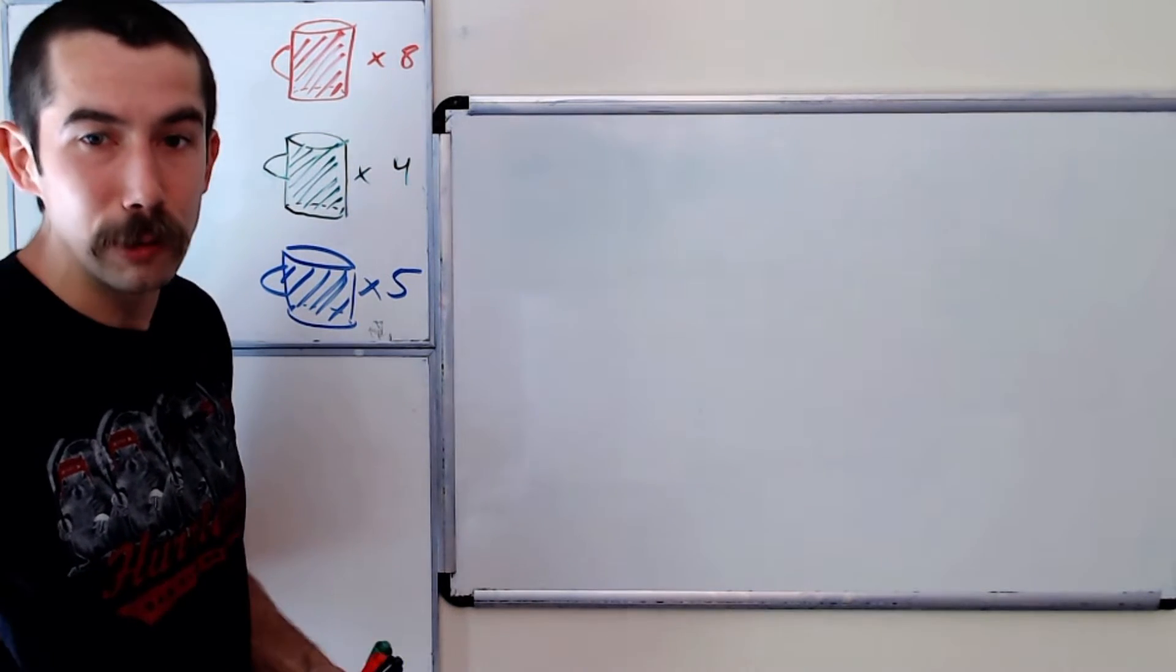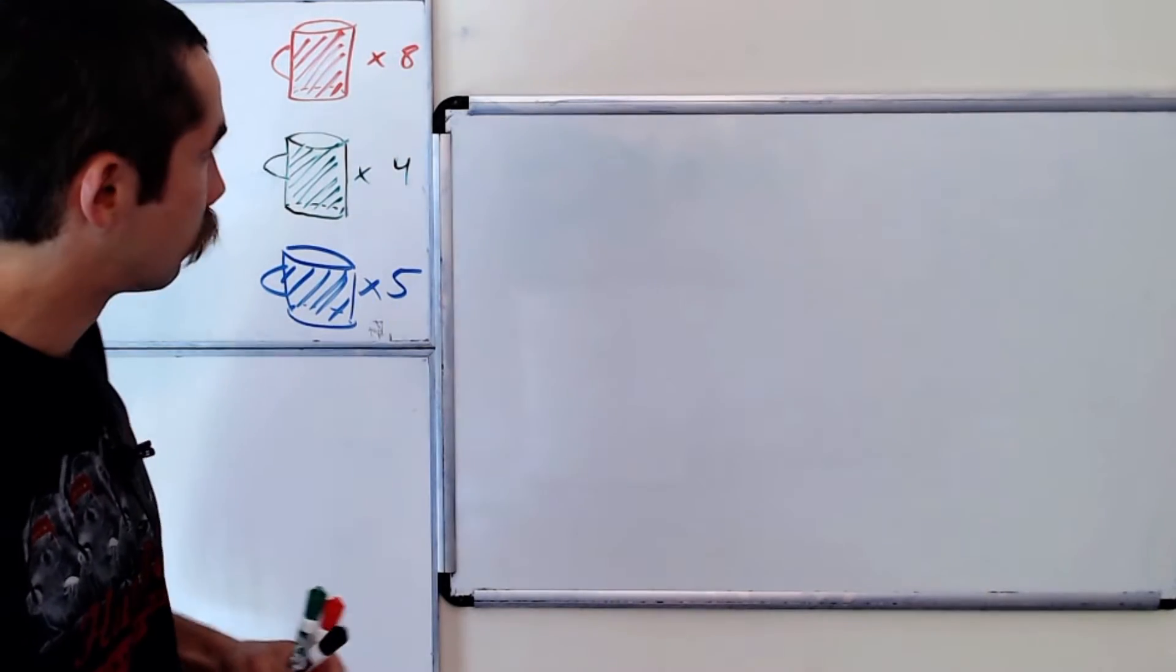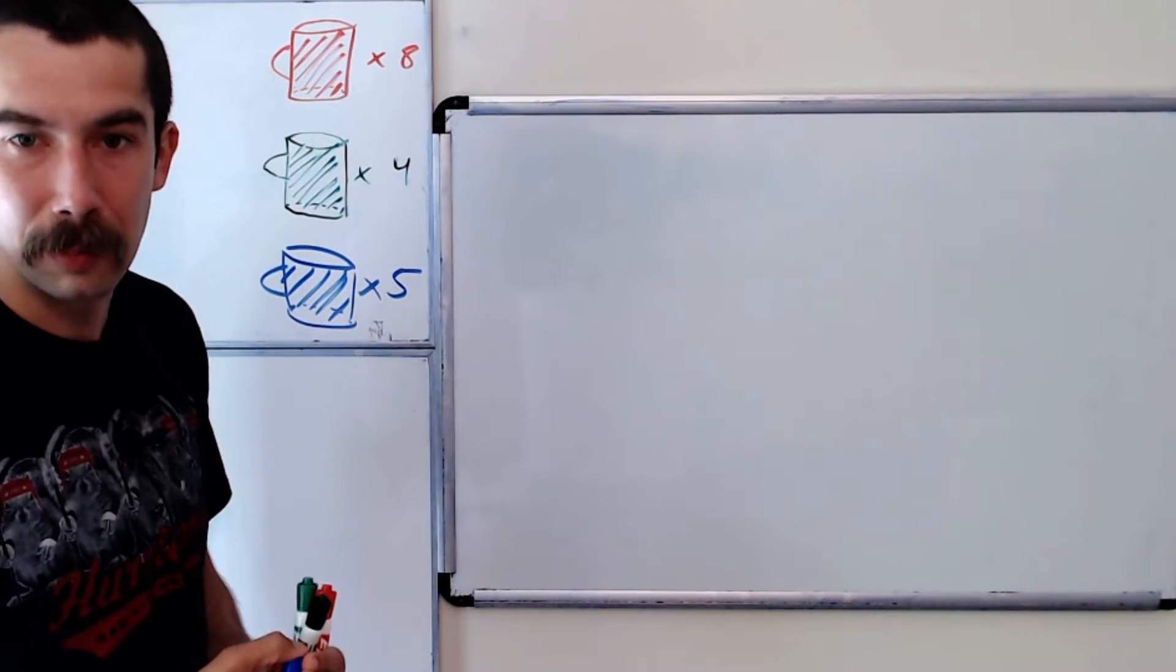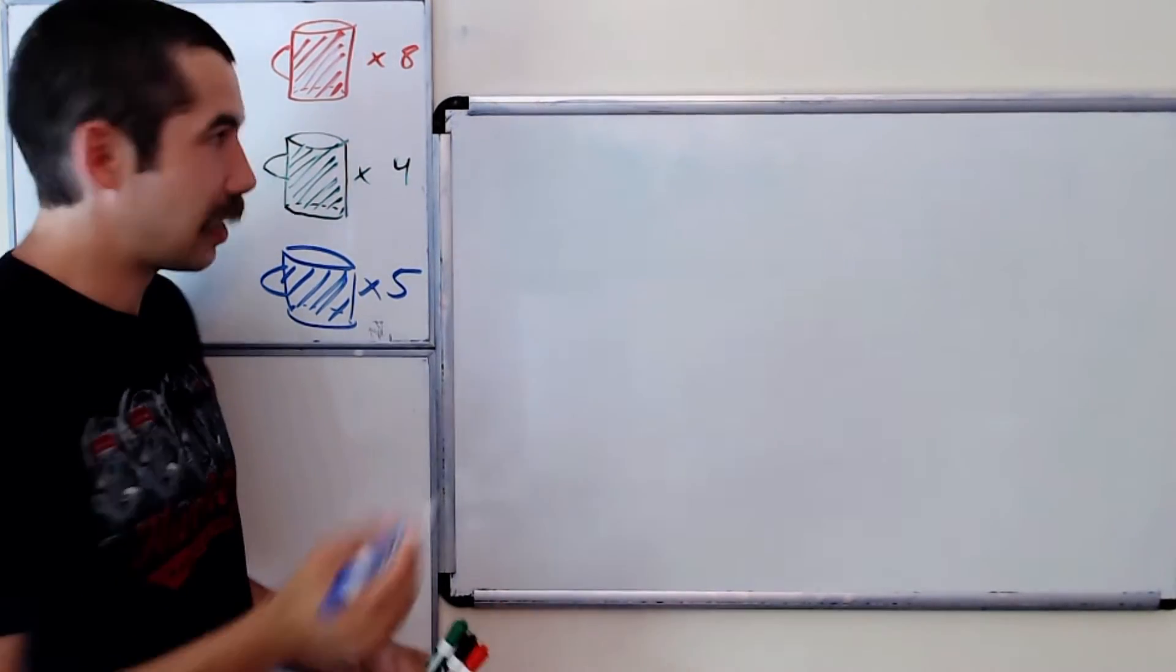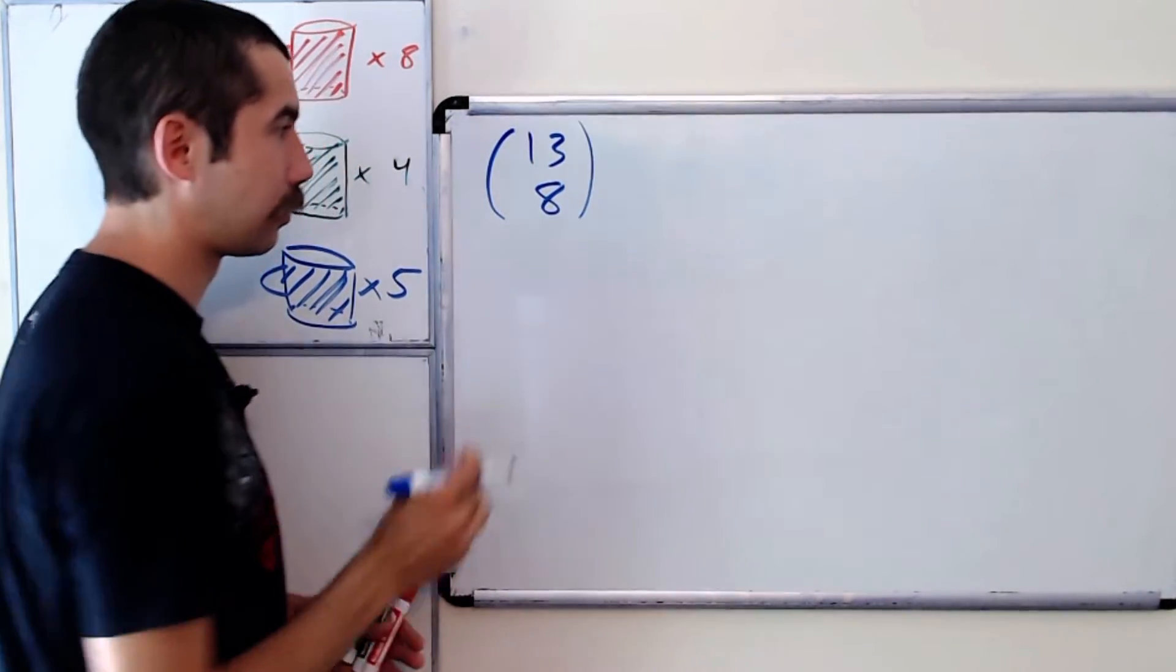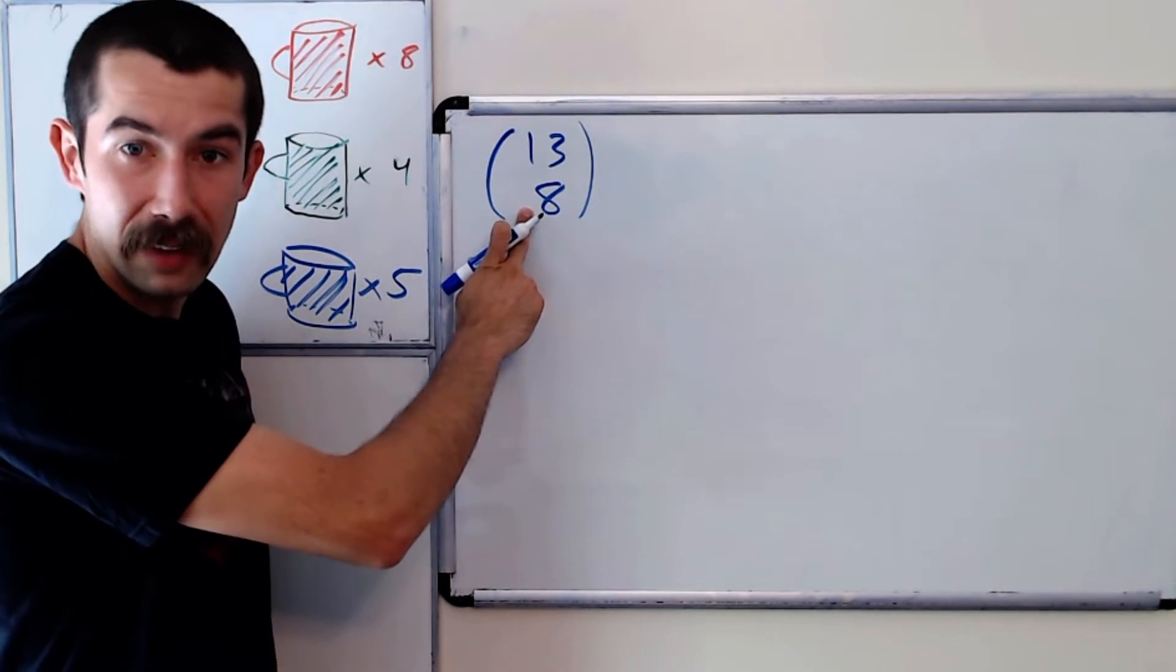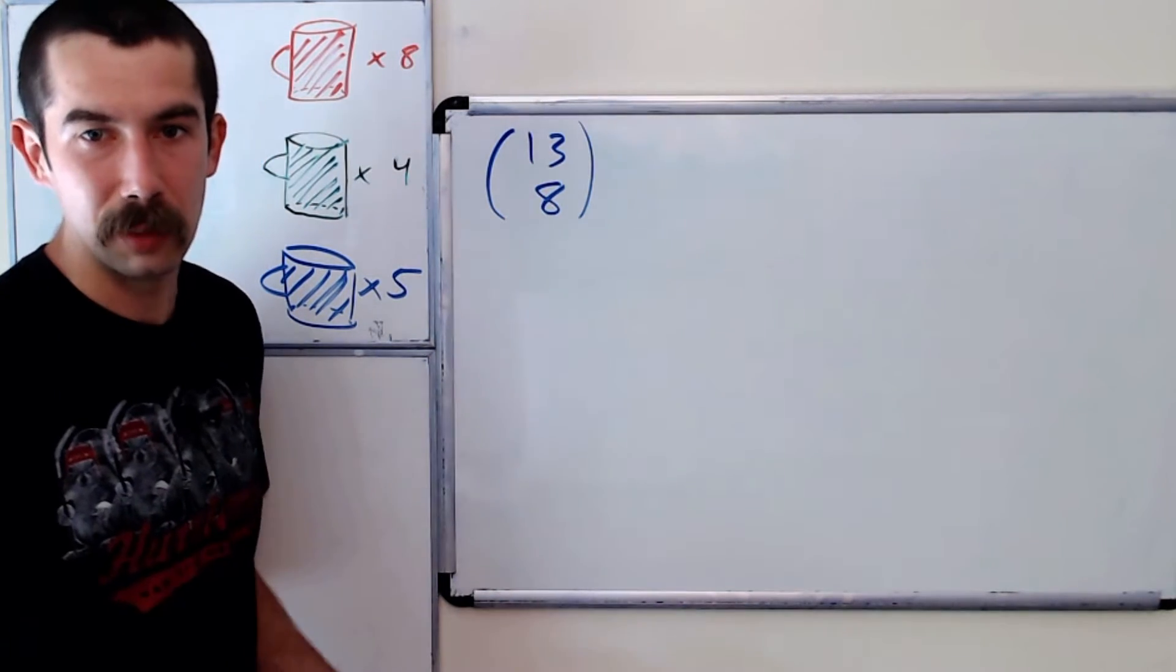Another way to say that is we need to choose eight of the locations to be red, and the other five locations will automatically be blue. The number of ways to do that is 13 choose 8, right? There's 13 mugs, we need to choose eight of them to be red, the other five will automatically be blue.